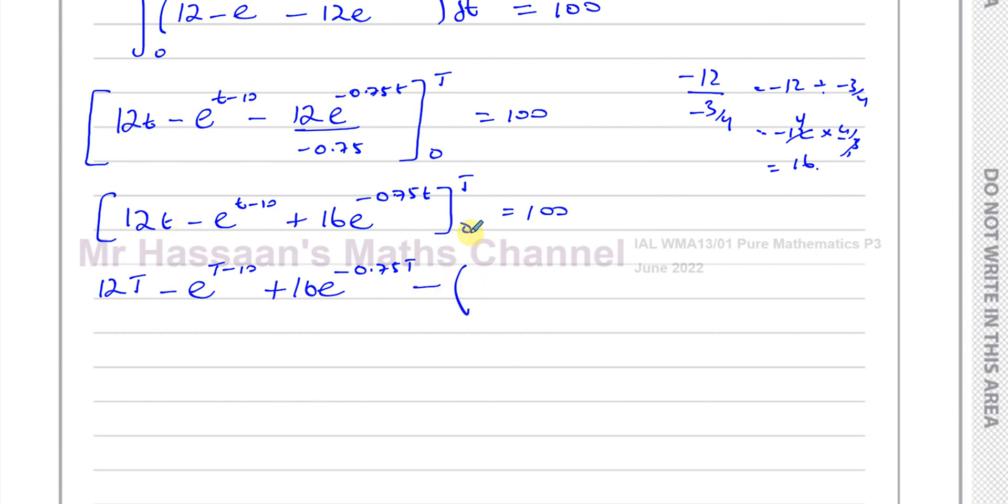Then I've got to also put zero into here. Don't think that zero will always cause everything to become zero. In fact, it won't. Zero in this is going to be zero, but zero into this will be negative e to the power of negative 10. And here, if I replace the T with zero, I'll have 16 plus 16e to the power of zero. E to the power of zero is one, so this can be plus 16, and that's equal to 100.